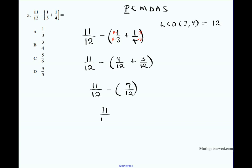Now we simply subtract: 11/12 minus 7/12. The denominator stays the same. Eleven minus seven is four, so we get 4/12. We can reduce this — four goes into both four and twelve — dividing by four gives a final answer of 1/3. The answer is option A.